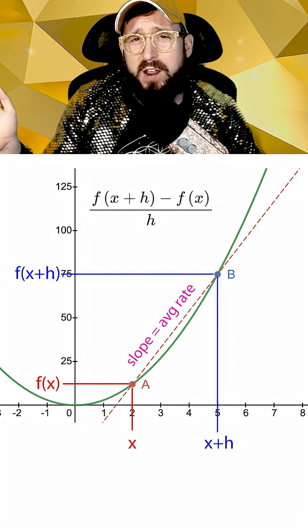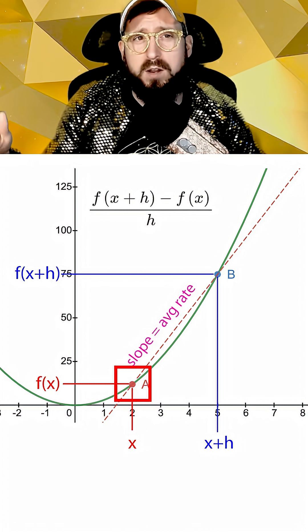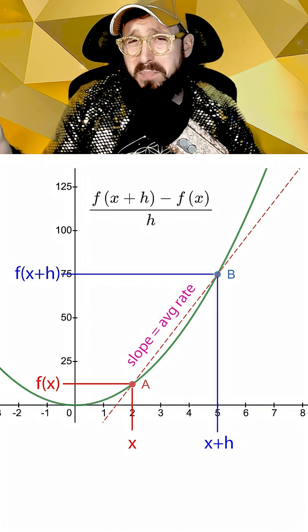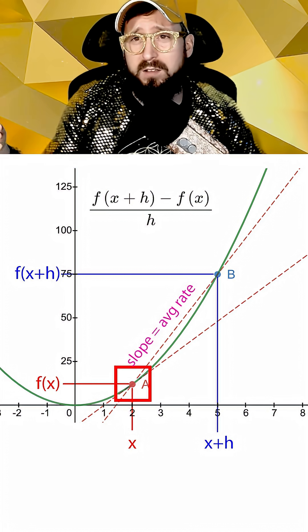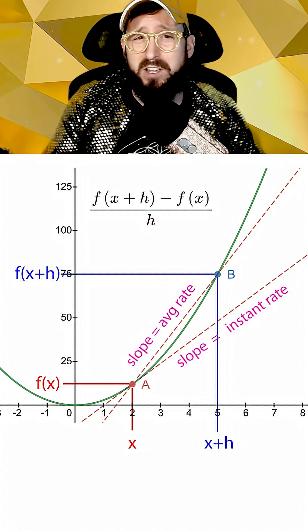Now while this average slope is a good estimate of the overall rate of change from point a to point b, we can see that it's pretty bad for estimating the slope closer to point a, where the function isn't increasing nearly as quickly.